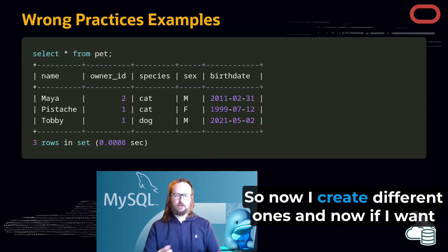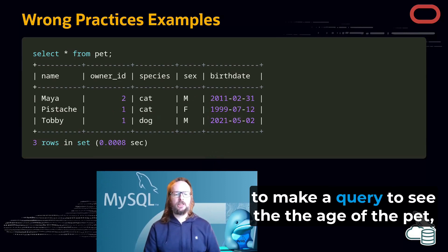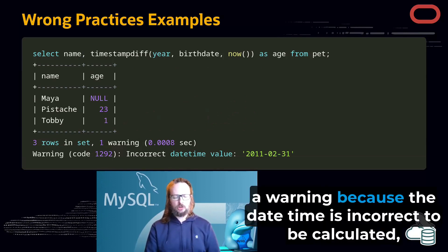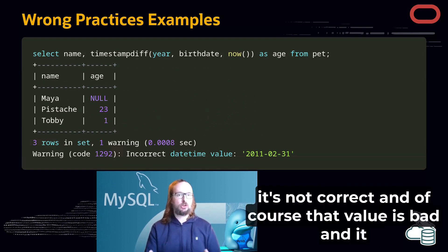Now if I want to make a query to see the age of the pet, we can see that we have an issue here, and we receive a warning because the datetime is incorrect to be calculated. This datetime is not correct.